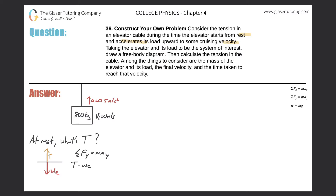Tension minus the weight of the elevator equals 800 kg times acceleration. But since it's not moving, the acceleration is zero, so that whole term cancels. Adding the weight to the right-hand side gives us tension equals the weight of the elevator, which is exactly what we expected.